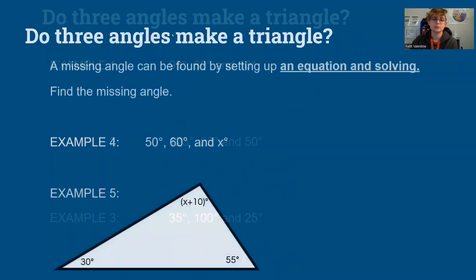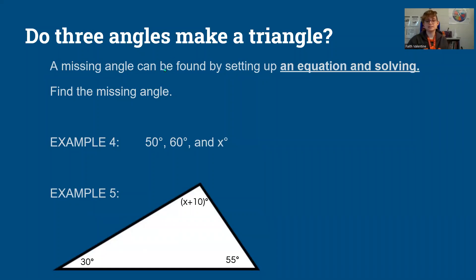Okay, so we can also find a missing angle by setting up an equation and solving. So we know, from the first set of examples, that three angles of a triangle have to equal 180 when they're added together. So using that knowledge, I can say 50 plus 60 plus my missing angle x, they have to equal 180.